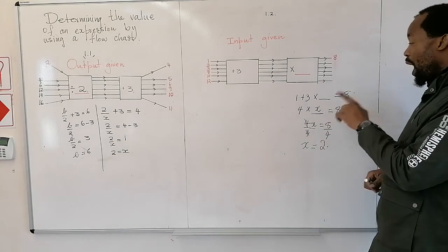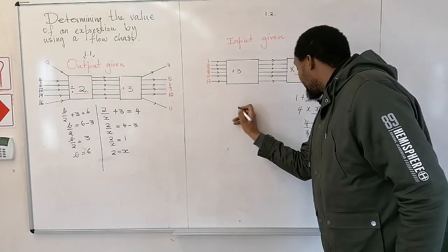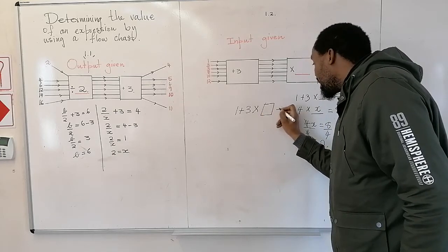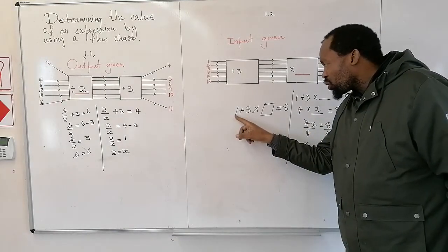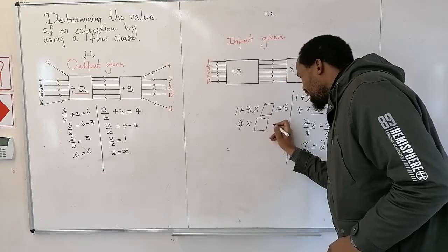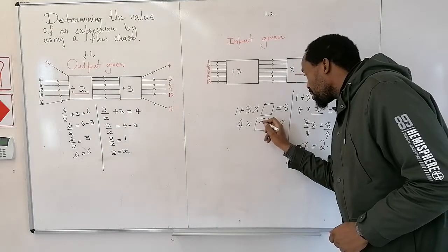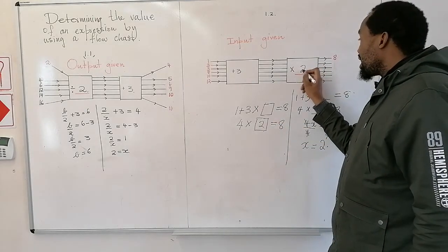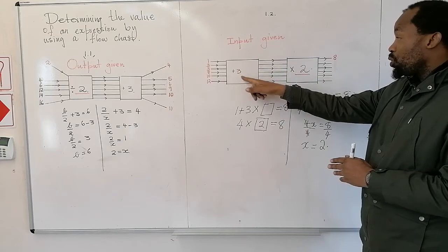For those in primary school, don't use X. Just do this: 1 plus 3, multiplied by a certain number, is equal to 8. Those clever kids will tell you that 1 plus 3 is 4, multiplied by a certain number, must give 8. They know that 4 times 2 gives 8. So the multiplier must be 2. Now we can get all the output values from the inputs using this rule.